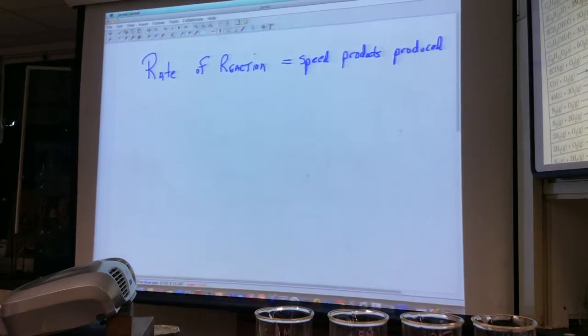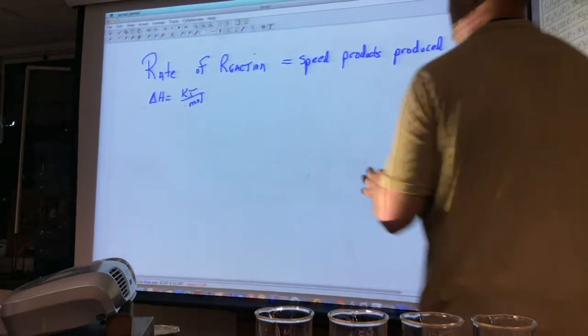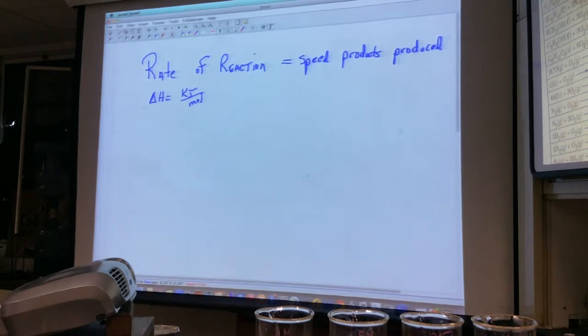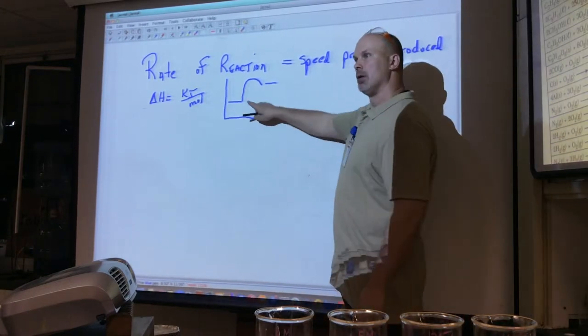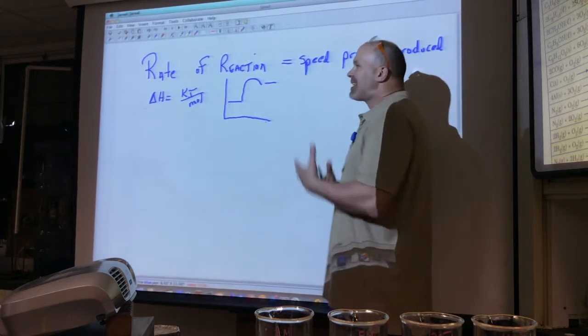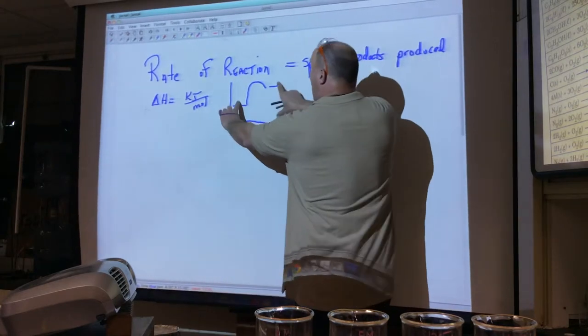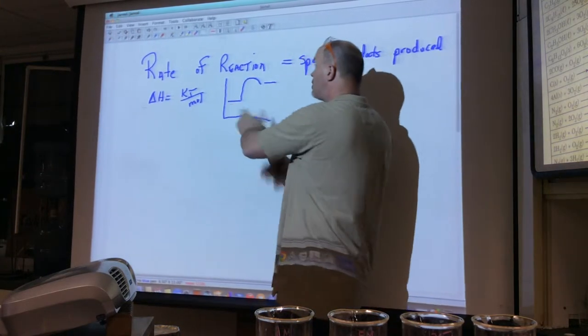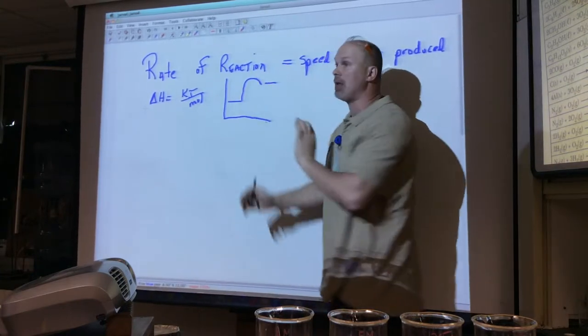Now, how fast the reaction goes has nothing to do with delta H. Delta H is how many kilojoules per mole of a substance is being released or absorbed. That does not change. It's based upon the stability of the reactants versus the stability of the products. In this curve that I drew here, what would be the delta H? Positive or negative? Positive. That value is fixed. How fast a reaction goes has nothing to do with the difference of the potential energy of the reactants and products. Get that out of your head.